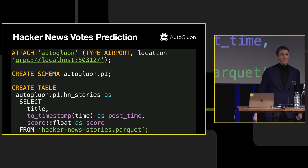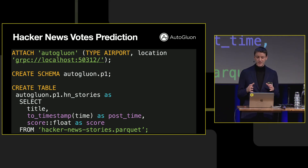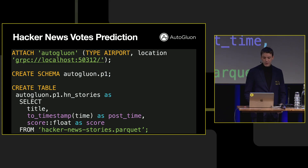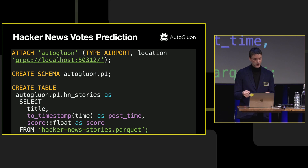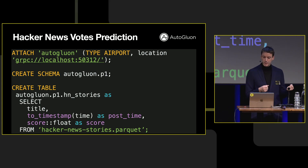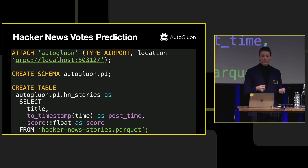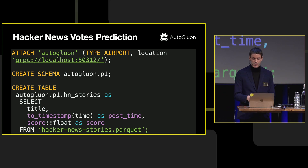The most useful example I could think of was: let's predict the number of votes a Hacker News post is going to receive. I have a new service called AutoGluon, which is a flight server that integrates AutoGluon and stores its data. We're going to create a table called HNStories, which is a history of Hacker News posts and the number of votes they received — grabbed from a Kaggle parquet file. Create a schema, create a table, we're already going.